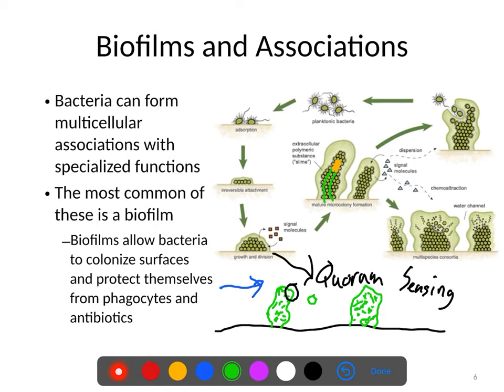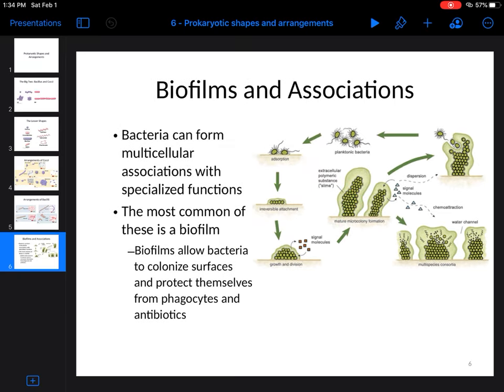Biofilms are very important environmentally, but medically they're also important because bacteria that can form biofilms are more virulent than bacteria that cannot. There are several diseases — particularly UTIs — where bacteria grow in a biofilm formation, making them resistant to the immune system, resistant to antibiotics, resistant to phagocytosis, and much more difficult for the body to get rid of. And that is prokaryotic shapes and arrangements.